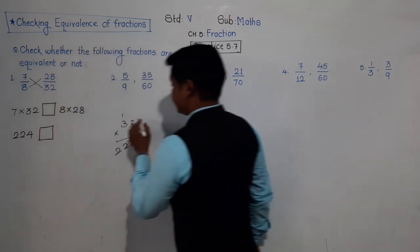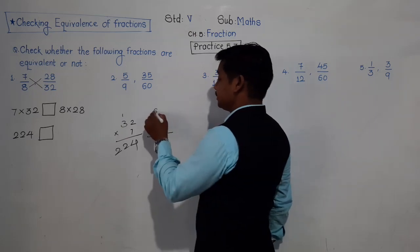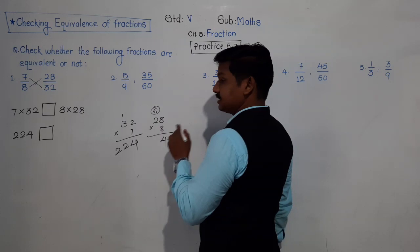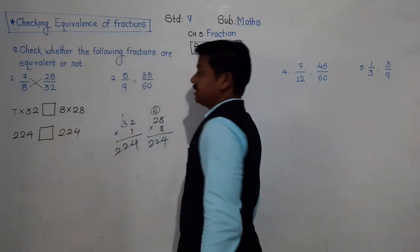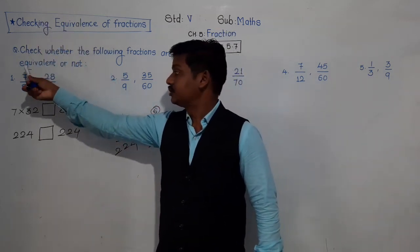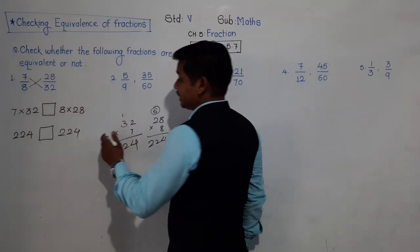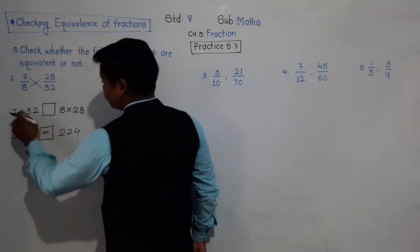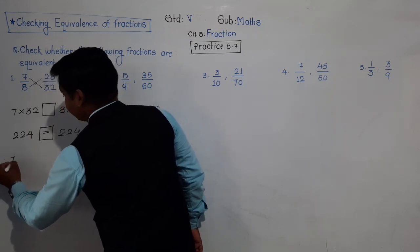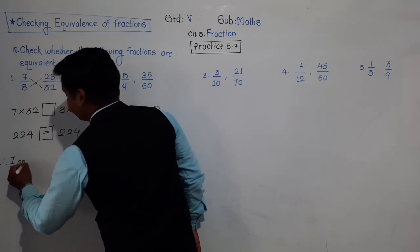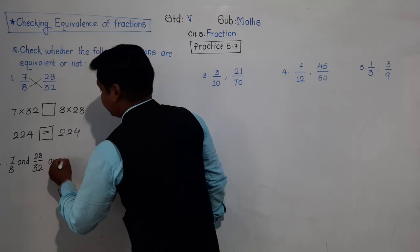Now 28 into 8: 8 eights are 64, 4 comes down and 6 is carried; 8 twos are 16 plus 6 is 22. So the product is 224. Both products are the same, 224 equals 224 — they are equal. So 7 upon 8 and 28 upon 32 are equivalent.